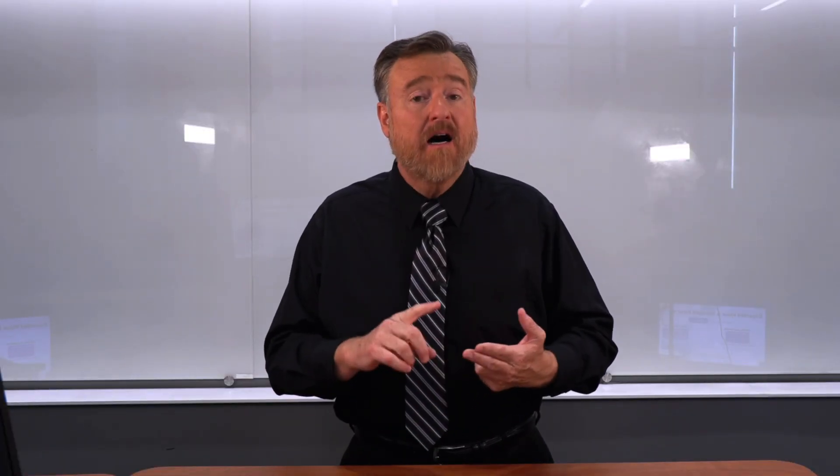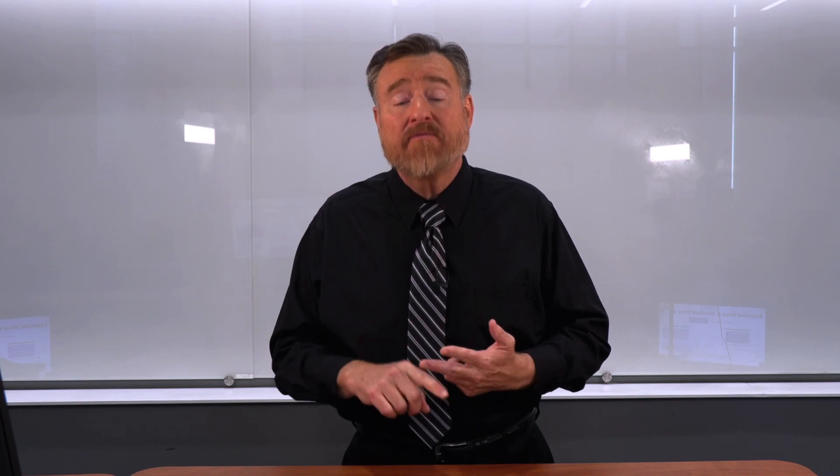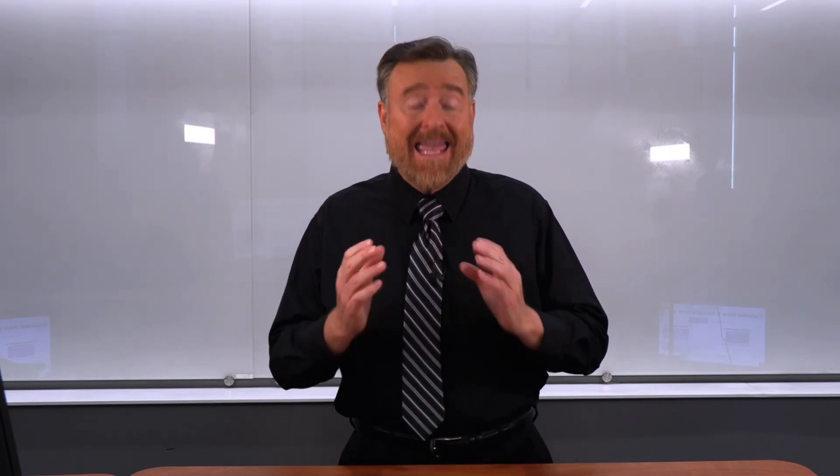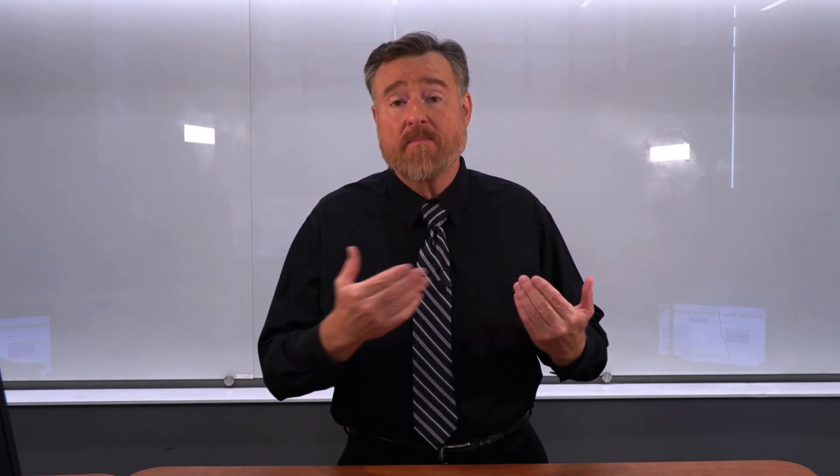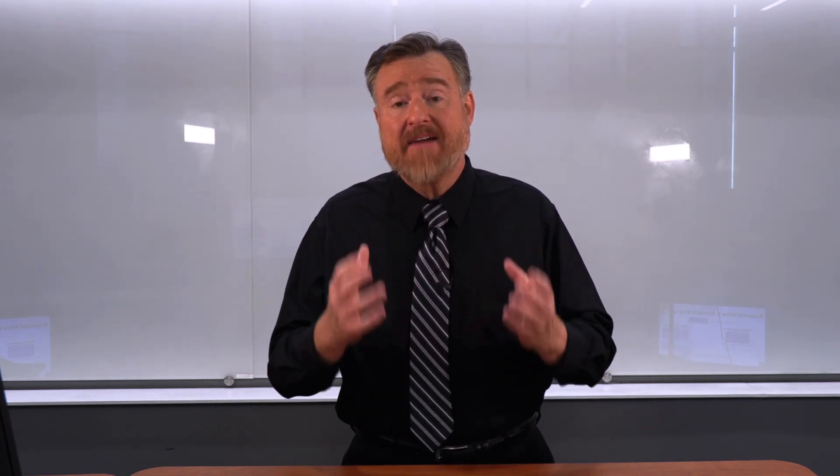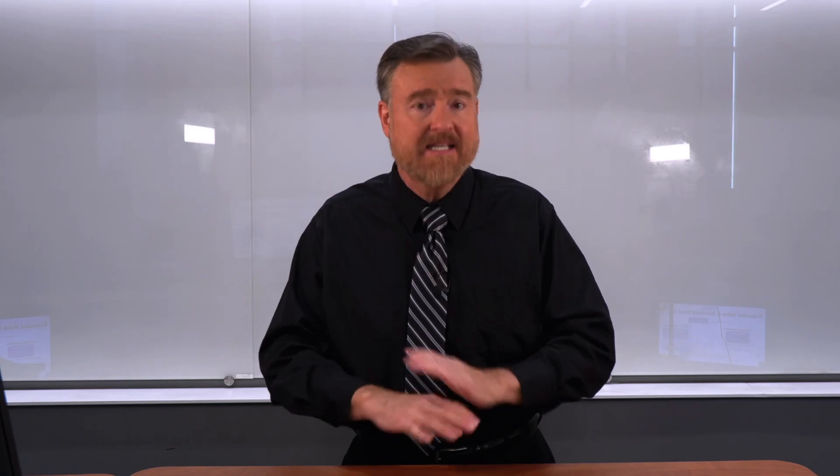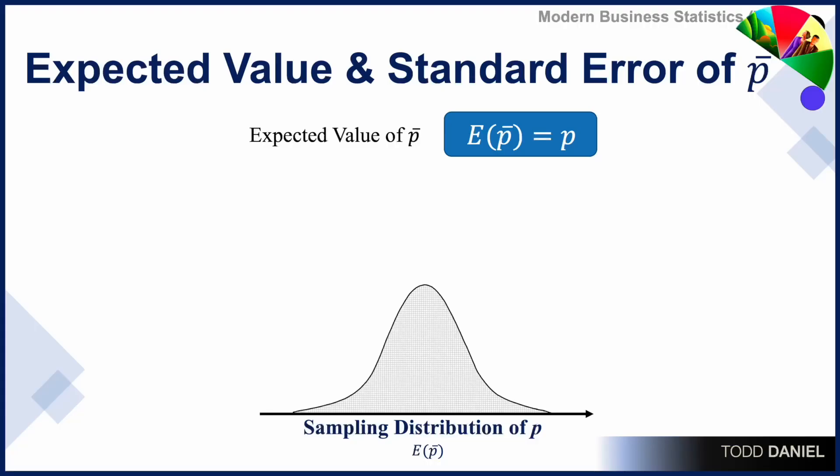Did you know that you can get a mean of proportions? The average proportion, which is P bar, is the estimator for the population proportion. It is the value that we would expect to get in any given sample. The expected value of the proportion in a sampling distribution of the proportion is the population proportion.